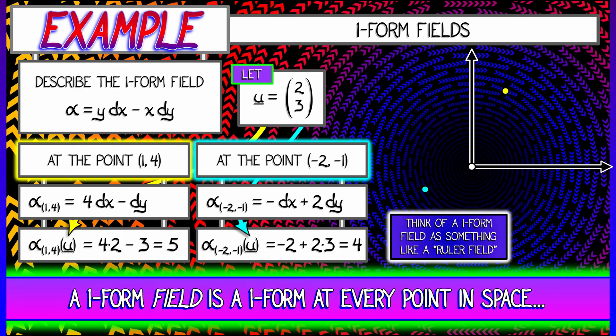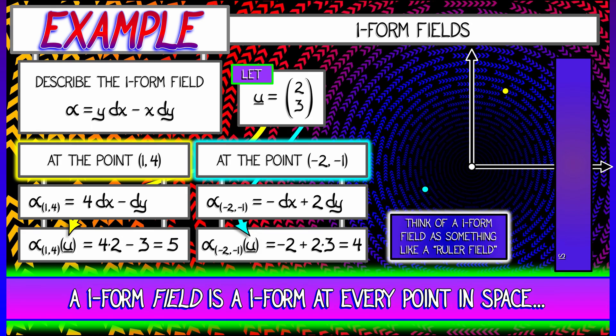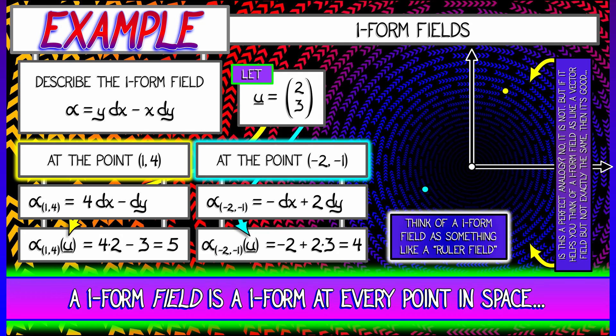So again, I like to think of a one-form field as something like a ruler field. That is not a perfect analogy. You shouldn't take that one to the bank. But if it helps you remember that a one-form field is doing something like taking a dot product with some vector at every point in space, and that this can vary from place to place, then that's not a bad way to start. There are some more complexities involved.